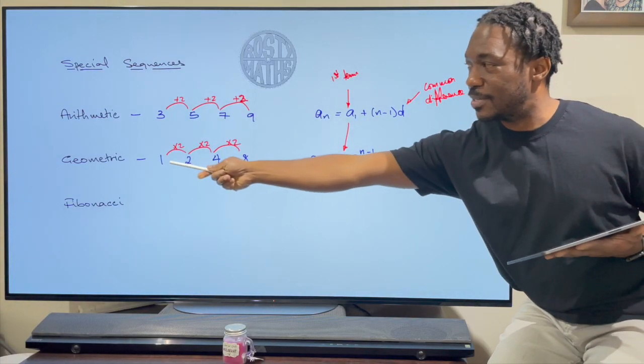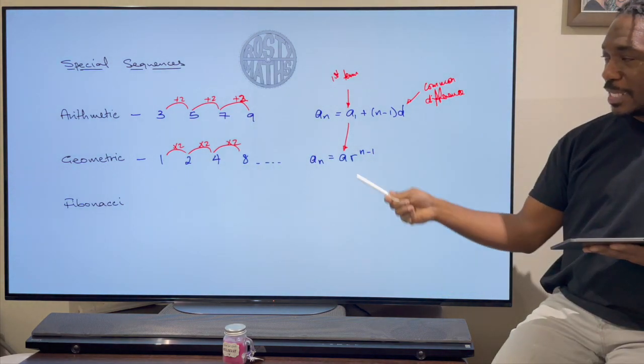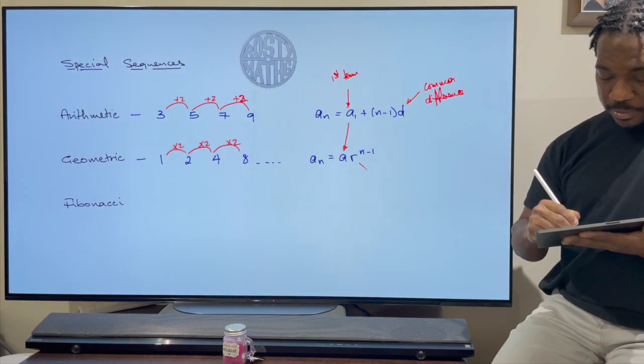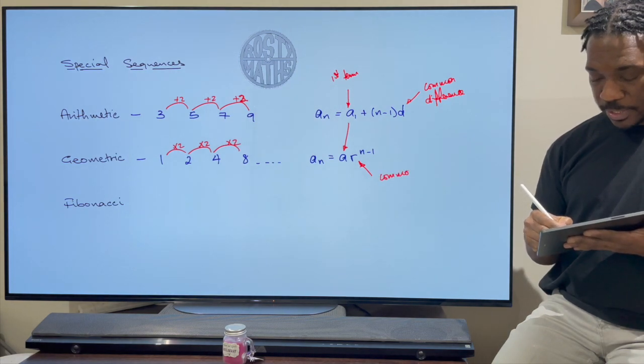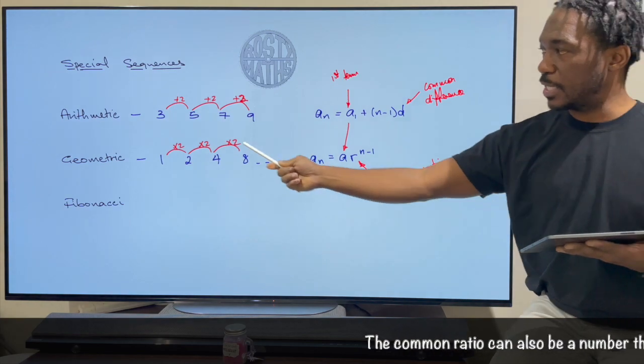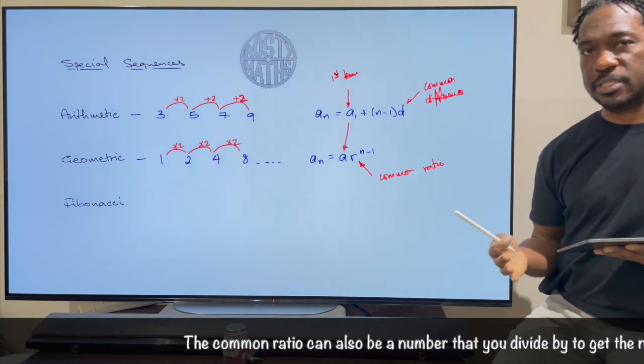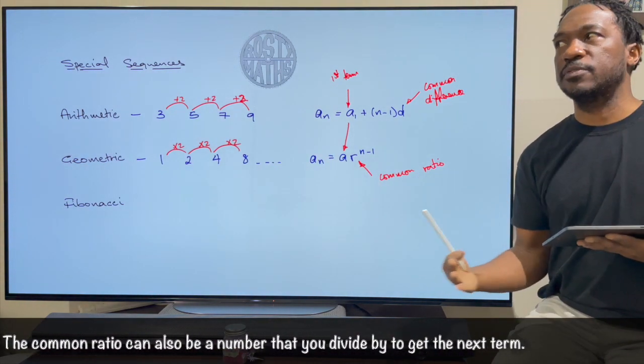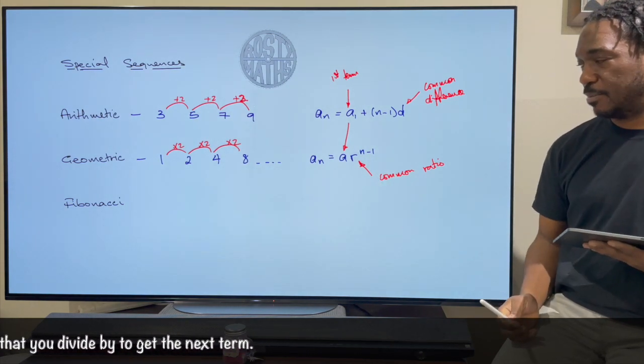So in this case the first term is 1 and then the r is my common ratio. So that's my common ratio and again the common ratio you can see here is going to be 2 because I have been multiplying all of the numbers by 2 in order to get the next number.